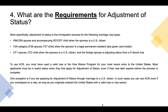One exception is if you are applying for adjustment of status through marriage to a U.S. citizen. In such cases, you can use AOS even if you overstayed a visa, as long as you originally entered the United States with a valid visa or visa waiver. Before you can apply for AOS, you must make sure a green card is available for you. This is automatically the case if you're applying as a spouse or immediate relative of a U.S. citizen. If you're applying as a more distant relative or your sponsor is a green card holder, you could face a long wait and should check your priority date.